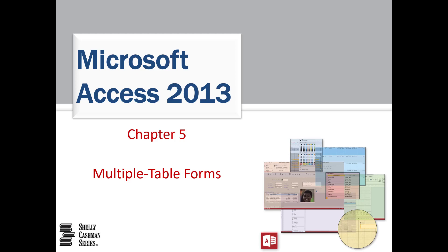Hello everyone. In Chapter 5 we will be working with multiple table forms. In the previous chapter we designed forms for Bavant Publishing Company. Now we are going to add more detail to those forms and tables so that decision makers can fetch all related information in one view. For example, a bookseller or representative can sell to many customers. We want to design two forms where the master form shows the representatives and the sub form shows the list of related customers — a one-to-many relationship between book reps and customers.